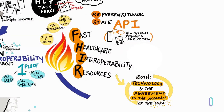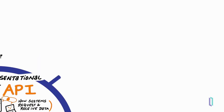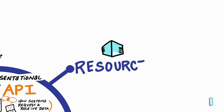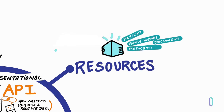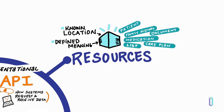Let's take a look at the elements that make up FHIR. First, FHIR resources are logically discrete data concepts, such as a patient, medication, or document, which have a defined meaning and a known location on a server. A FHIR resource includes all the data elements necessary to define the data concept. For example, the patient resource includes elements such as given name, family name, and birth date.